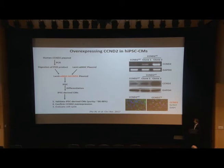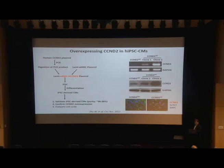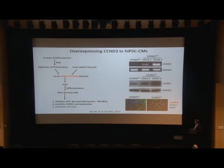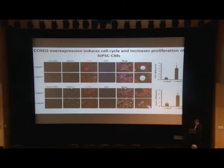This is the experimental design. We generated a lentiviral construct and coupled it with the alpha-MHC human Cyclin D2 gene, so that Cyclin D2 gene expression is exclusively restricted to myocytes and not to iPS cells or other subtypes. We performed differentiation and characterized the myocytes derived from the iPS cells. RNA and protein analysis demonstrated that we obtained clones with high expression of the Cyclin D2 gene, and histology showed that overexpression of this gene is mainly localized in the nuclei.